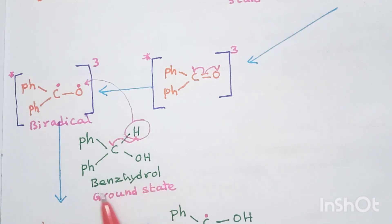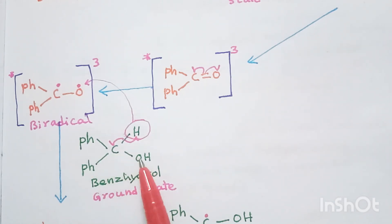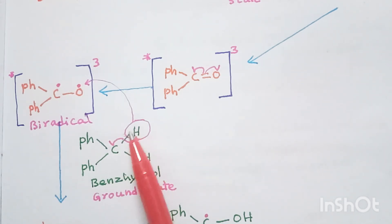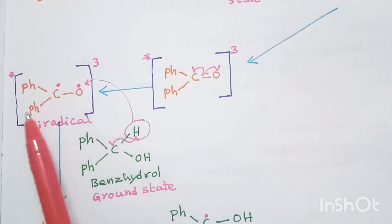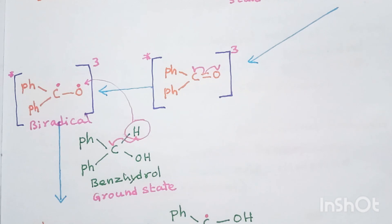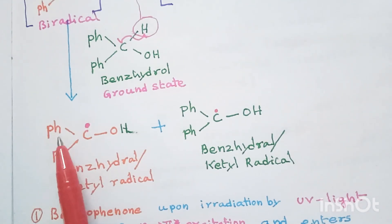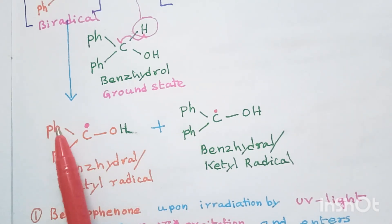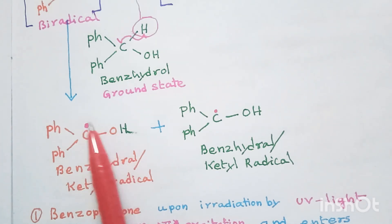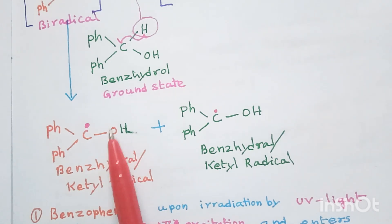The oxygen radical abstracts hydrogen from benzhydrol — Ph-Ph-CHOH — which is present in ground state. The bond between carbon and hydrogen in benzhydrol breaks homolytically, releasing the hydrogen atom which is abstracted by the O• radical of the biradical. As a result, we get two new radicals: one is Ph-Ph-C•OH, the benzhydrol radical derived from benzophenone.